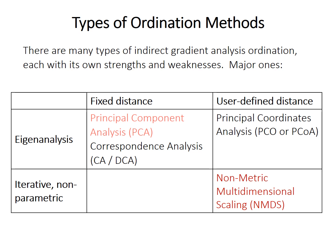There are a number of types of ordination, and we're not going to cover them all in this class. The last video discussed principal component analysis, which used a fixed distance measure — Euclidean distance between the samples — and created the new ordination axes from the eigenvectors of an association matrix. By doing so, it imposes a linear relationship between the samples, which may not be good for certain cases.